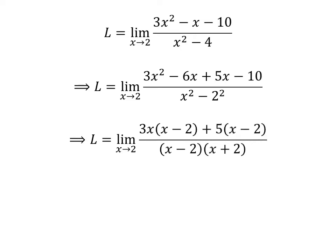Now let us take out the common factor 3x in the first two terms of the numerator and 5 in the next two terms. The denominator can be expressed as (x minus 2)(x plus 2).